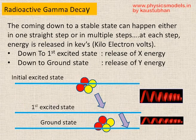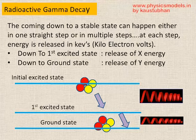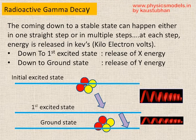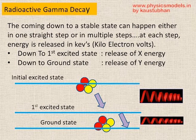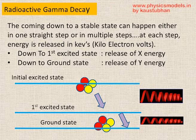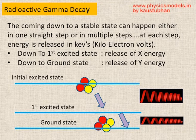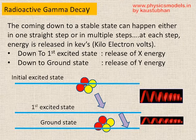This slide shows the way the energy gets released. The daughter nucleus which comes out in an initial excited state can come down to the ground state either straight away in one single step or in a number of steps. Either way, the total energy that's released from the top to the bottom will be the same — it can only get divided by the number of steps as shown there.